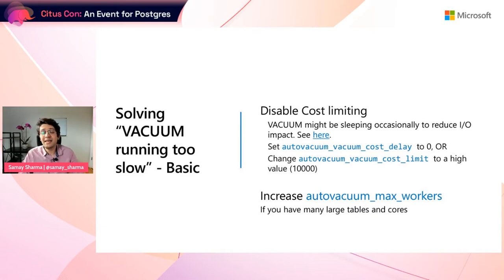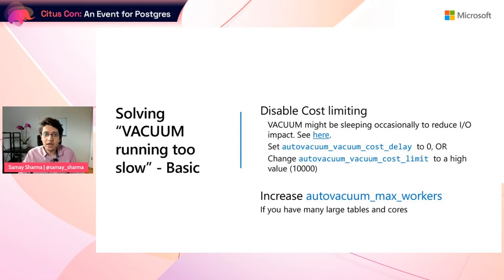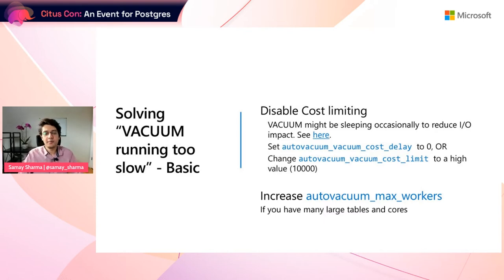If you have many tables, that can also cause this problem where you always see autovacuum running. For that, I'd recommend increasing autovacuum_max_workers, which allows autovacuum to start more vacuum processes at the same time — vacuuming 3, 5, or 10 tables simultaneously. One thing to keep in mind: make sure you have a decent number of CPU cores, because without that you might overwhelm the database with just vacuum jobs. This is a good suggestion if you have many large tables and a good number of cores.